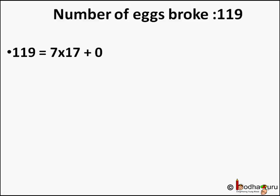Look how 119 fits into the puzzle in each equation. 119 equals 7 into 17 plus 0 — that is, 119 divided by 7, we get 17 as quotient and remainder as zero. Do it in your copy, you will find out.